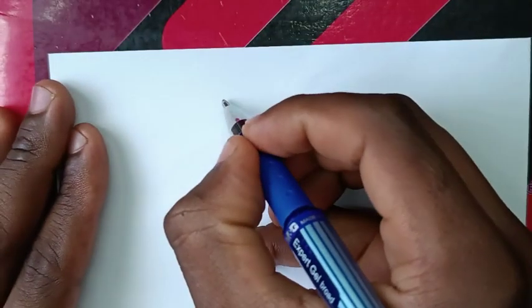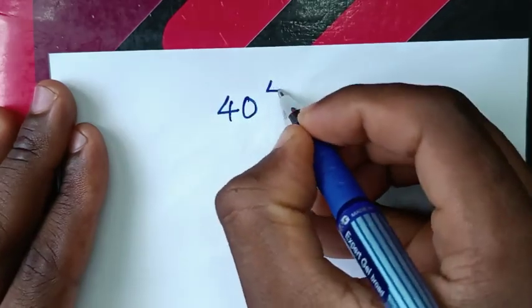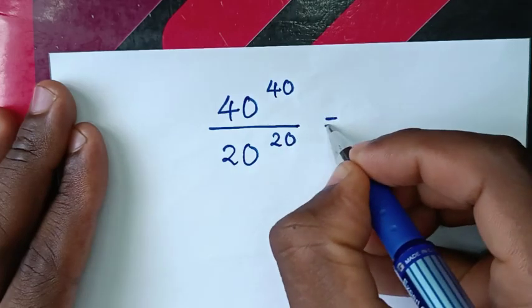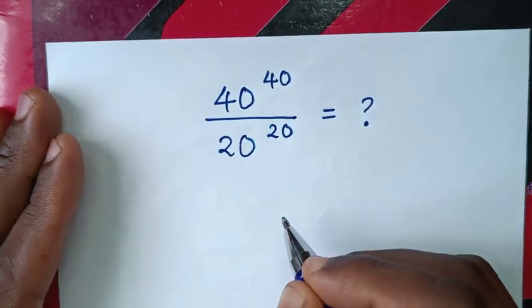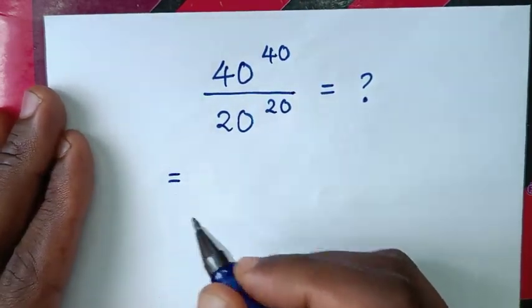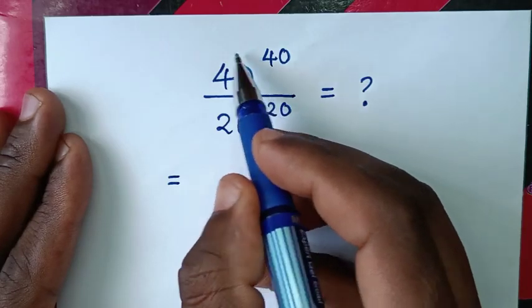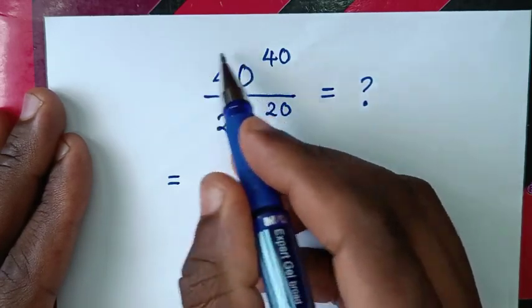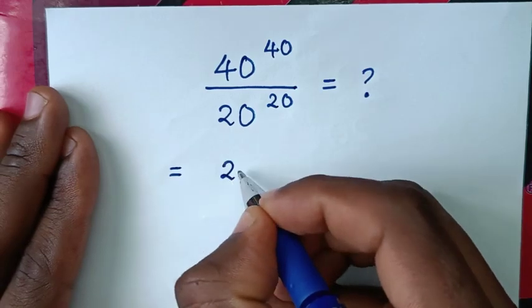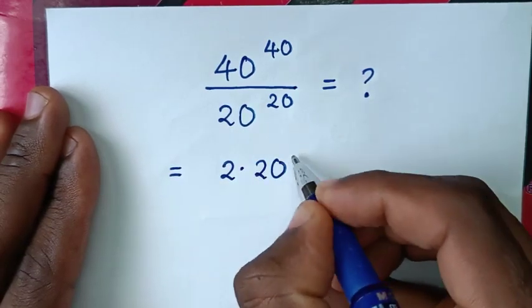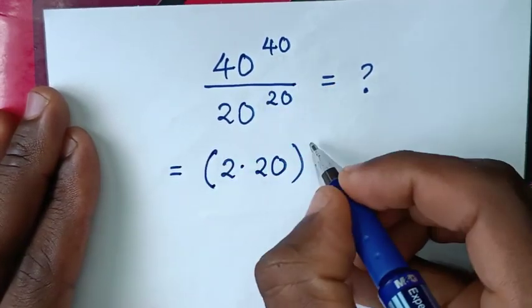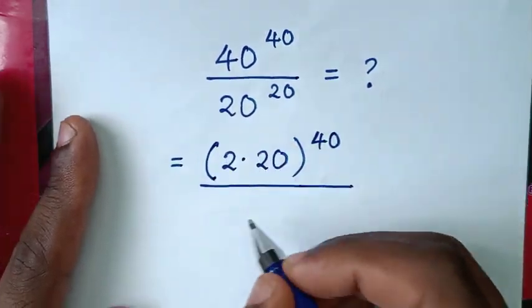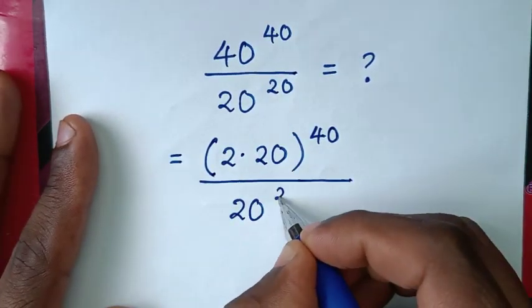Starting again from the original problem: 40 power of 40 over 20 power of 20. In this method, we rewrite the base 40 to have a common base of 20. So 40 is the same as 2 times 20, giving us (2 times 20) power of 40, all over 20 power of 20.